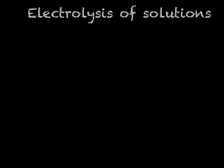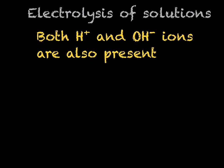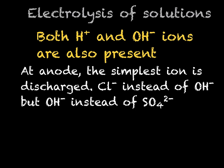We have just looked at the electrolysis of molten metal salts. However, we also need to know about the electrolysis of them in solution. This means that both hydroxide and hydrogen ions are also present — the H⁺ and the OH⁻ from the water. At the anode, the simplest ion is discharged. For example, Cl⁻ will be discharged rather than OH⁻, but OH⁻ will be discharged rather than SO₄²⁻. So the simplest ion will be discharged.